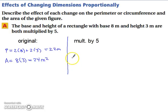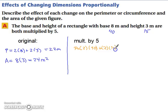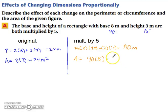Now let's look at what happens when we multiply both dimensions by 5, which puts the base at 40 and the height at 15. Our new perimeter is 2 times 40 plus 2 times 15, which gives us 110 meters. And our new area is 40 times 15, which is 600 meters squared.